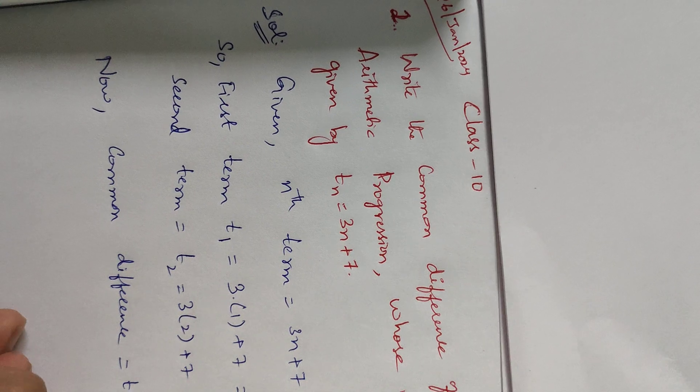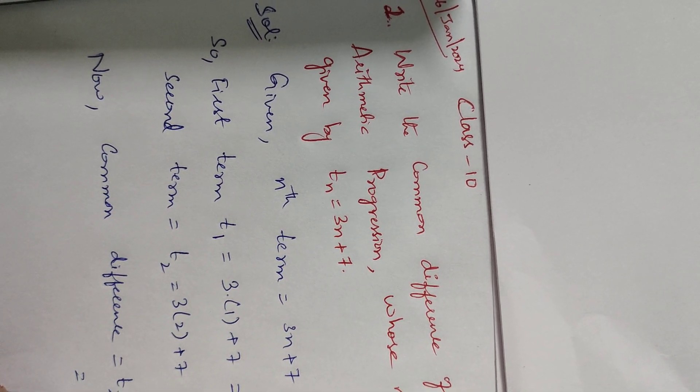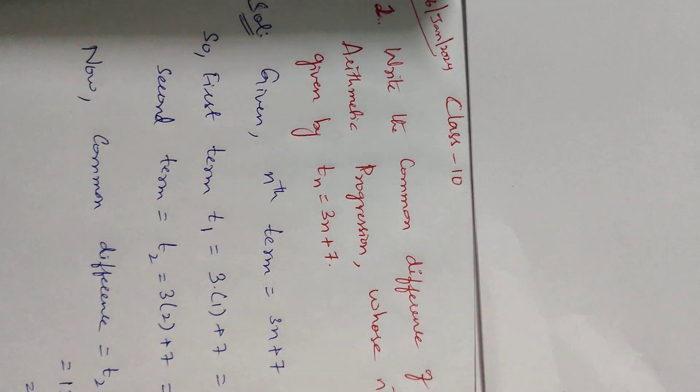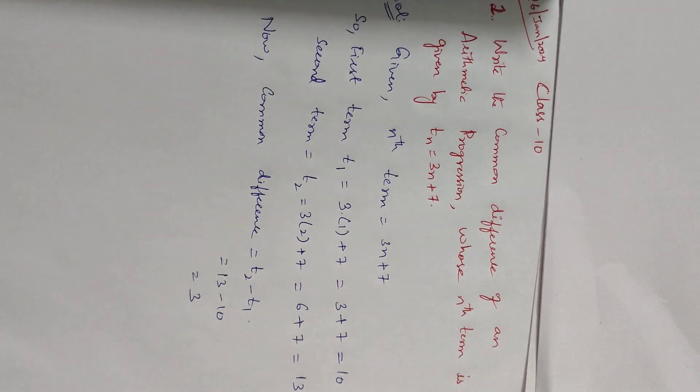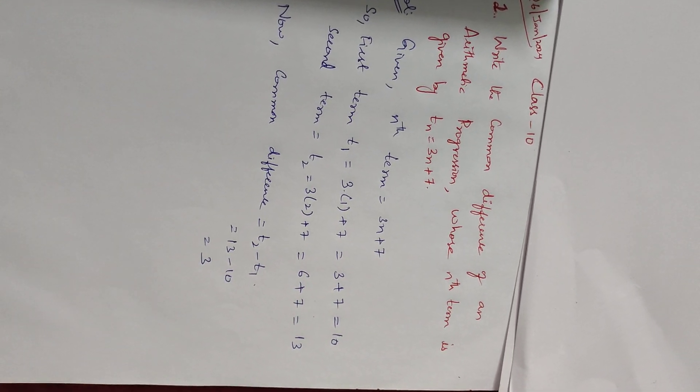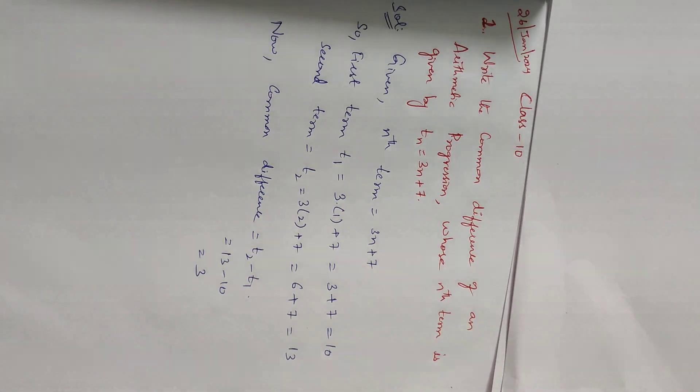So T_2 is 13 and T_1 is 10. The result is 3. This is how we find the common difference of the given arithmetic progression.